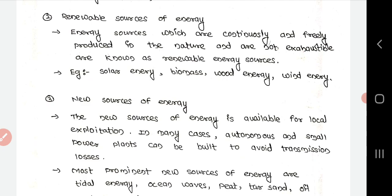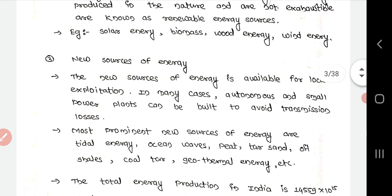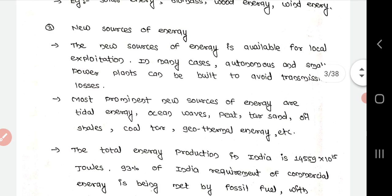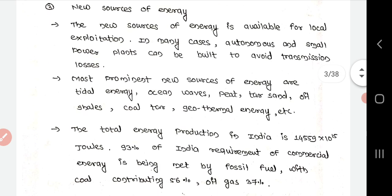The third classification is new sources of energy. New sources of energy are available for local exploitation. In many cases, autonomous and small power plants can be built to avoid transmission losses.